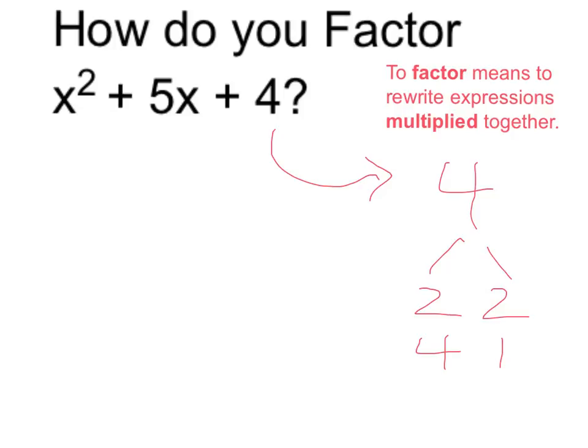Of course, the 4 and 1 are going to be the ones that add up to 5. Then, using these factors, I can now rewrite as two binomials multiplied together in the following way.